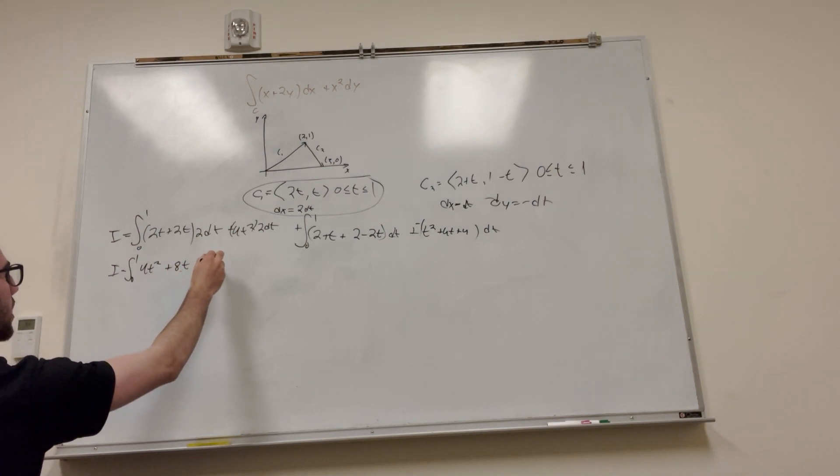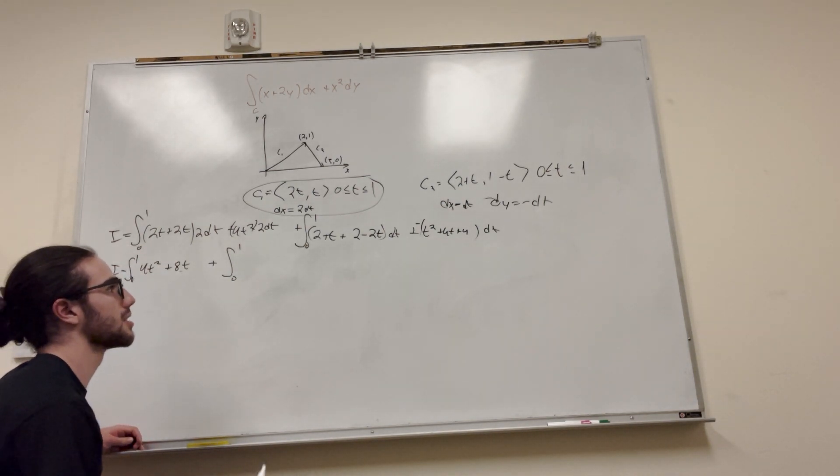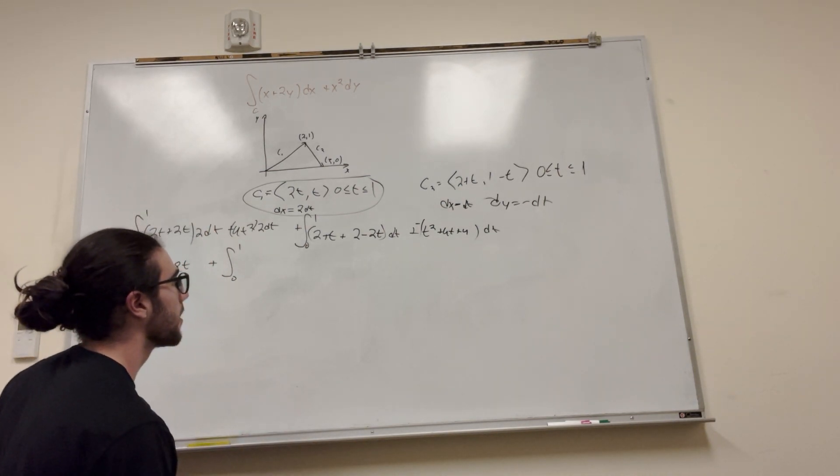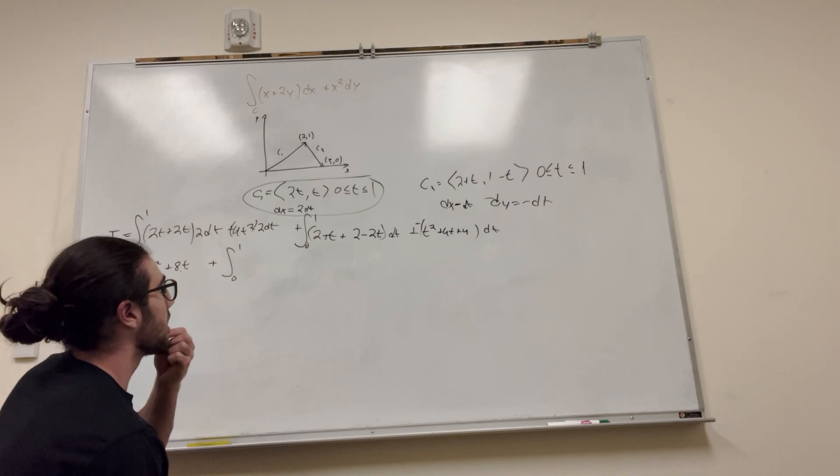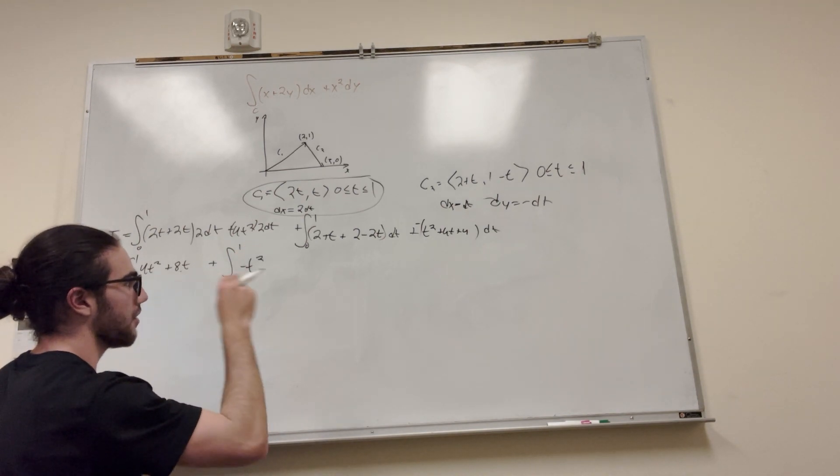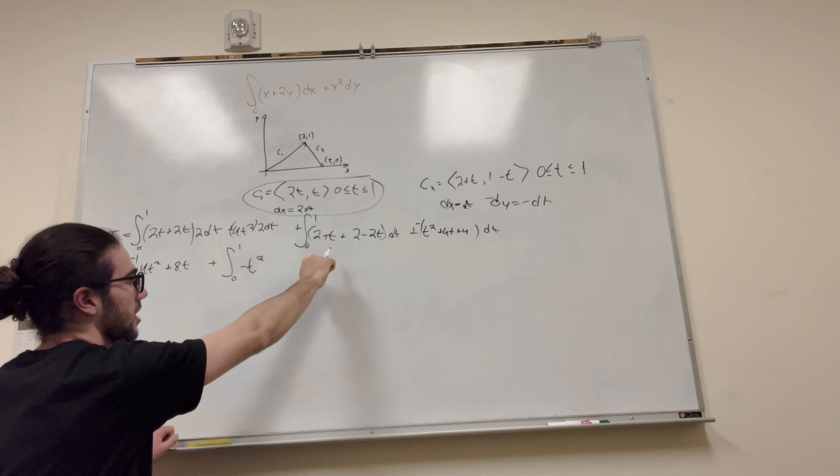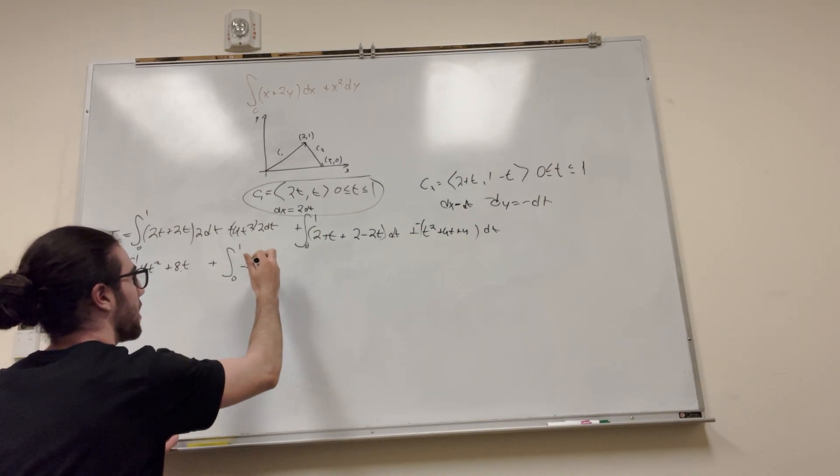And then so then our next integral. Now actually we could bring these two integrals together. I'm going to keep them apart because it's just simple or whatever. So let's see what we got here. I can't even read my own handwriting. All right, so we got -t². So we have -4t. We have a t and -t. It's going to be -5t.